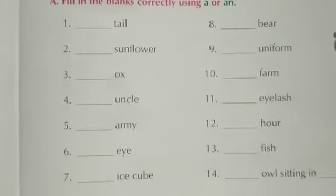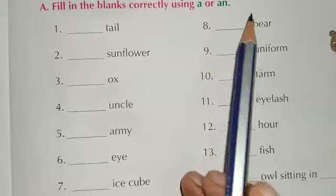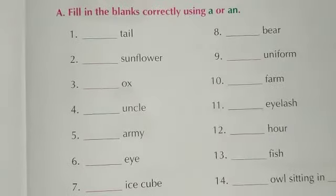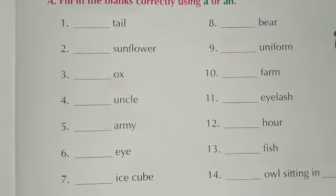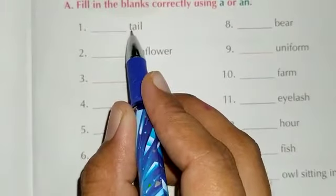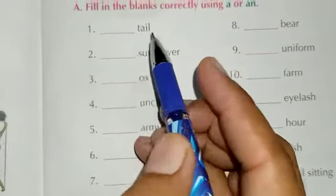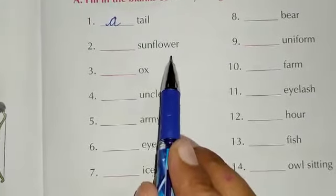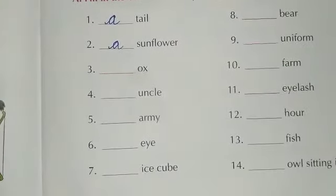Now let's move to the exercise. First exercise: fill in the blanks correctly using 'a' or 'an.' I'll do two for you, then the rest you have to do yourself. First: blank + T — T is a consonant, so we write 'a.' Second: sunflower — this is also a consonant word, so we use 'a' here. Accordingly, you have to do the other exercises.